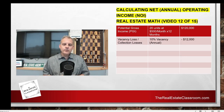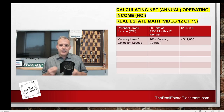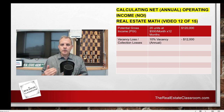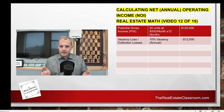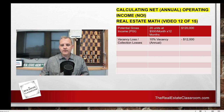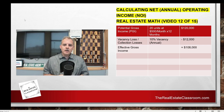Step two: we subtract the vacancy loss or collection losses. In our example, this 20-unit apartment community had a 10% vacancy — annualized, that equals $12,000. So we take $120,000 and subtract $12,000, which gives us the effective gross income of $108,000.